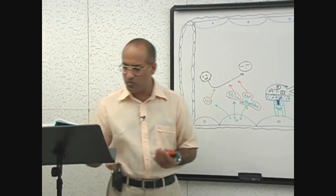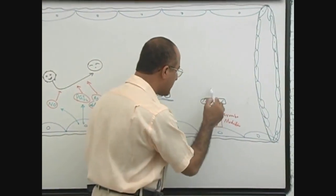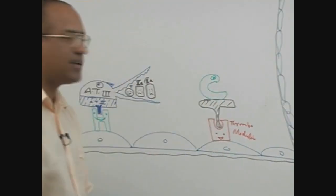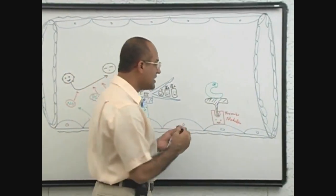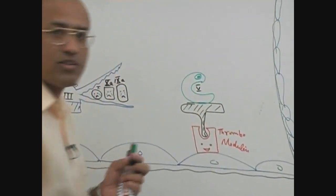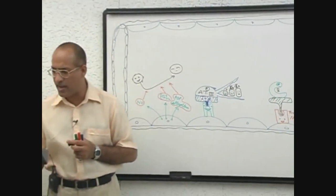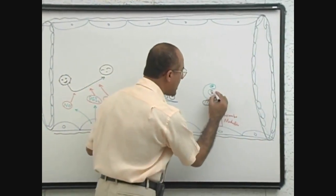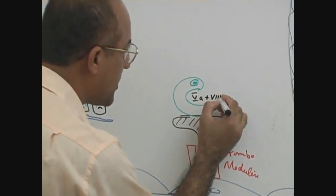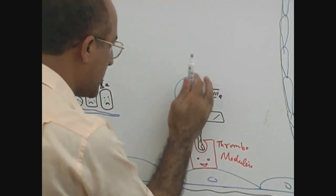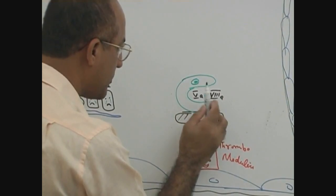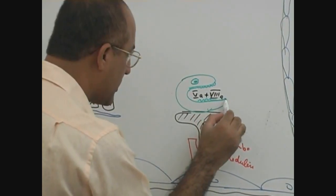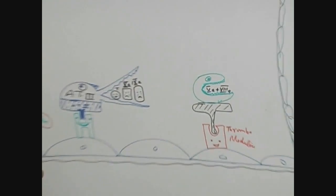Once thrombomodulin binds with thrombin, thrombin will activate protein C. Protein C will then eat up activated factor number 5 and also eats up activated factor number 8. So protein C, once activated, destroys these activated coagulation factors.